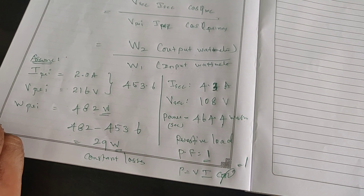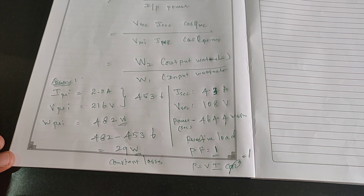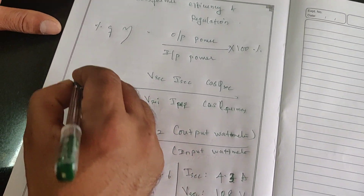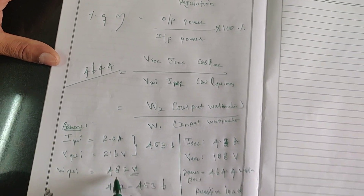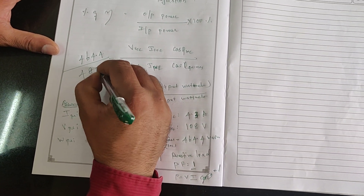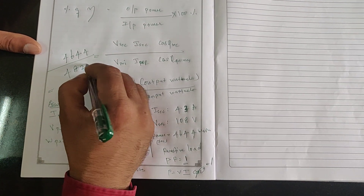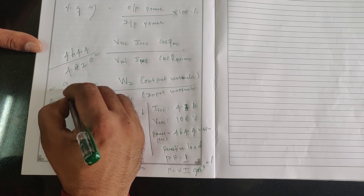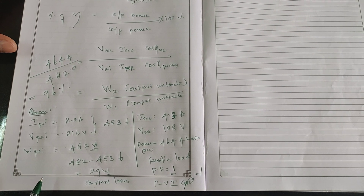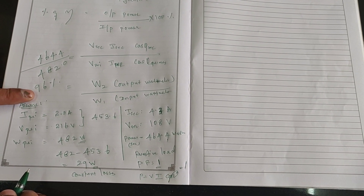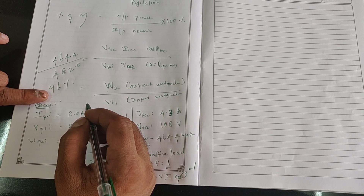Therefore, the efficiency is now calculated: this is the output side and this is the input side — output divided by input. Output is 464.4 watts and input is 482 watts. Therefore, the efficiency of this transformer is approximately 96%. In any transformer, the output efficiency should not be less than 90% or 95%.